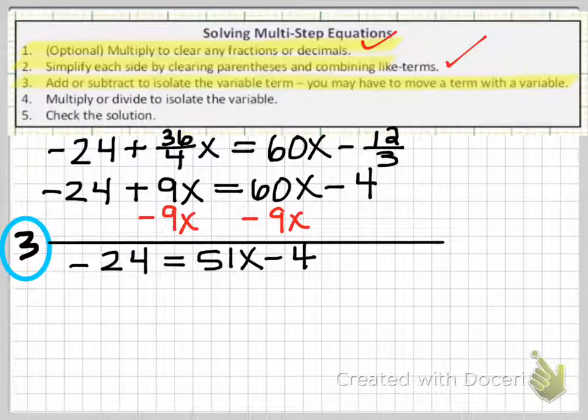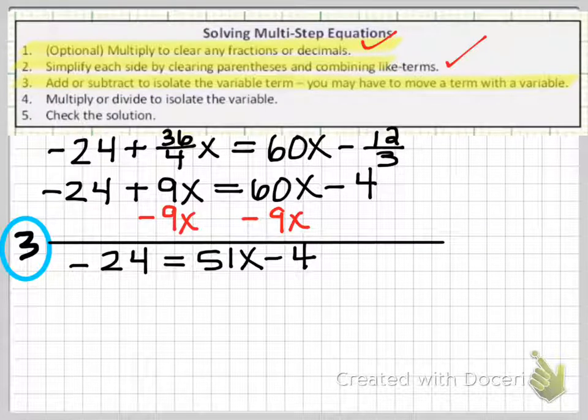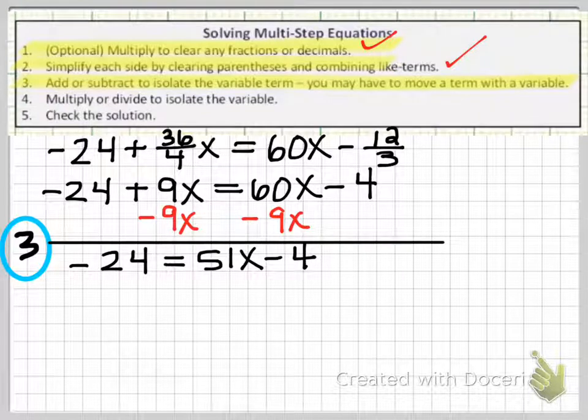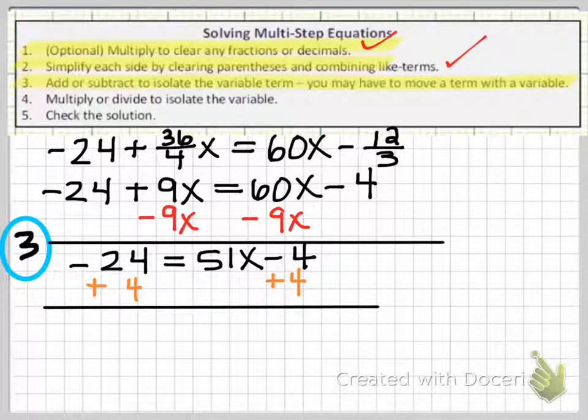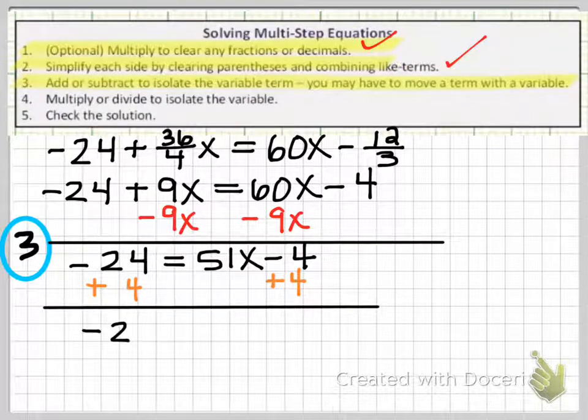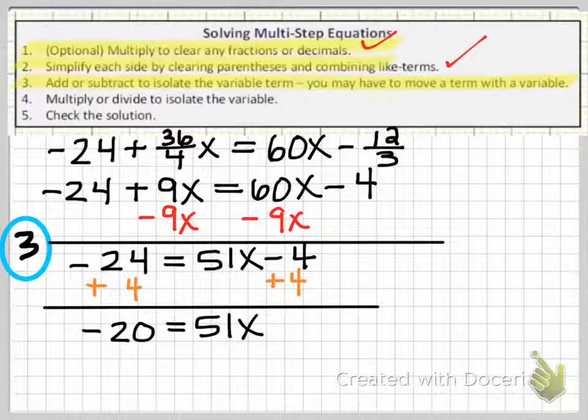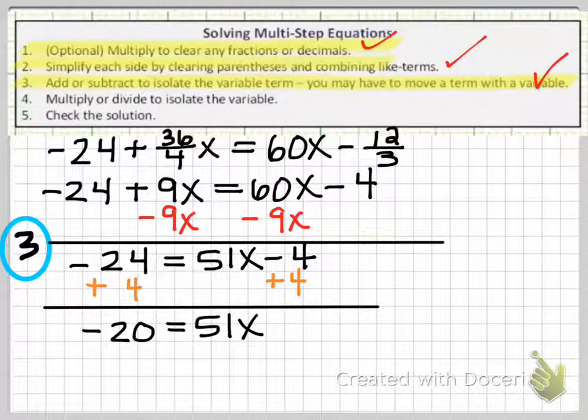But now my x term's not isolated. I did put it on the right side. I collected them on the right side, but it's not isolated. I still have to add 4 to both sides to truly isolate the variable. So after I add 4, I get -20 on the left side, and now that equals 51x. So now I'm done with step 3.